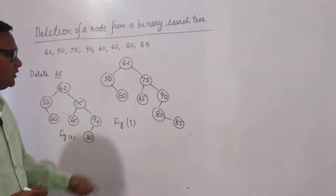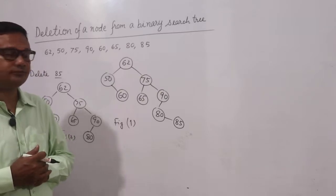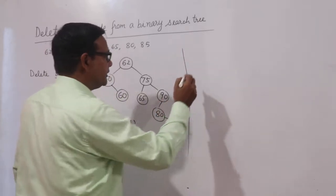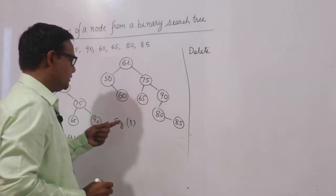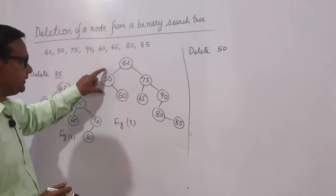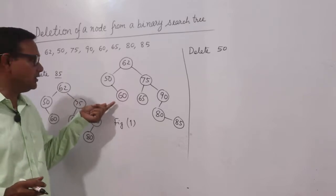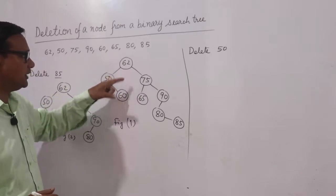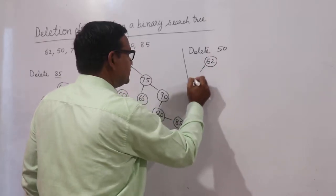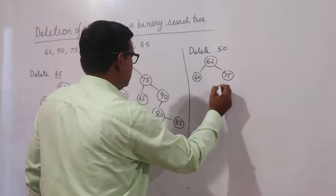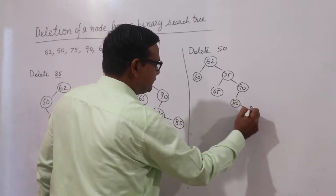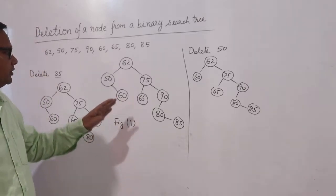For example, delete 50. If I delete 50, there is only a single node here which is less than 62, so it will be the left child of 62, and 50 will be deleted. The resulting tree will have: 62 as root, 60 as its left child, 75 as its right child, with 65 under 75, and 90 with 80 and 85 below it. So a node with a single child can be deleted this way — this is Figure 3.